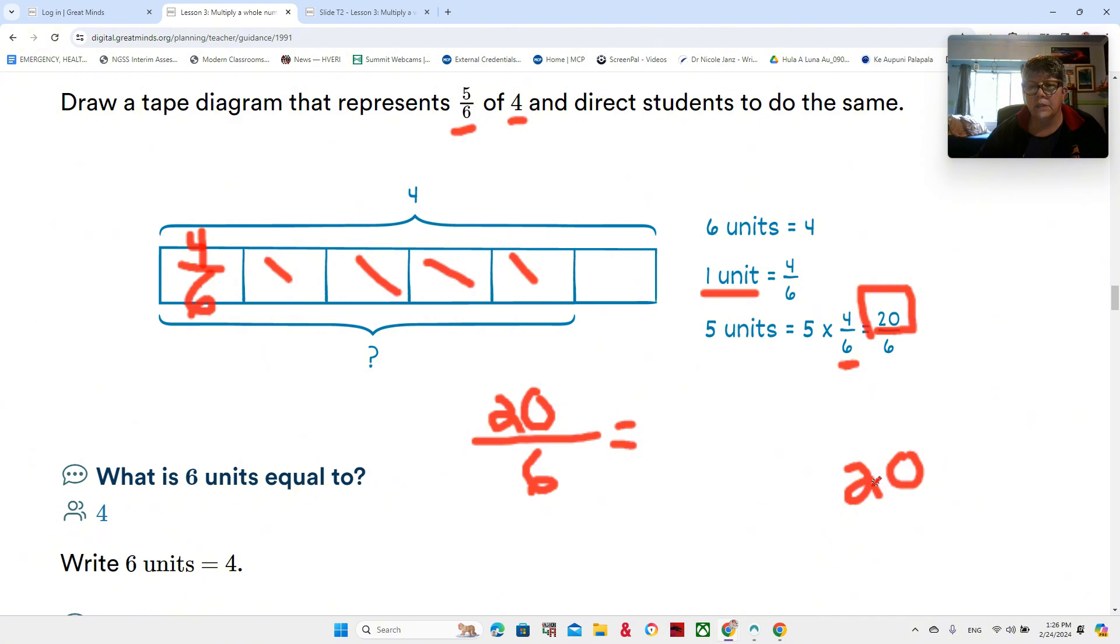Twenty divided by six. Six times three is 18, and that leaves two left over, so that would be three and two-sixths.